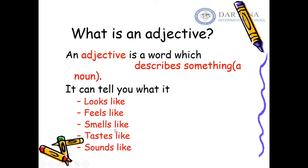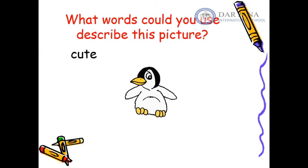How does something taste? For example, this cupcake is very delicious — 'delicious' describes how the cupcake tastes, so it is an adjective. And how does something sound? This car is very loud — 'loud' describes how the car sounds, so 'loud' is also an adjective.